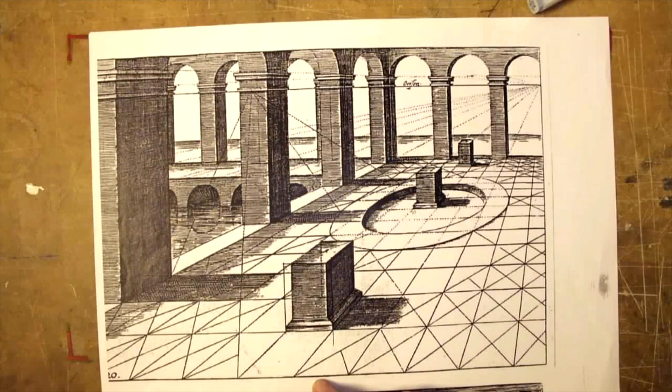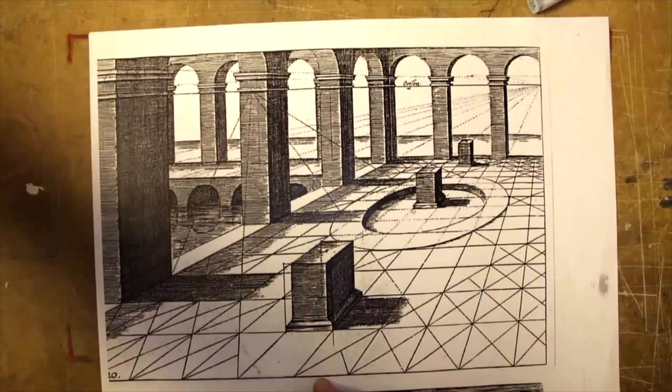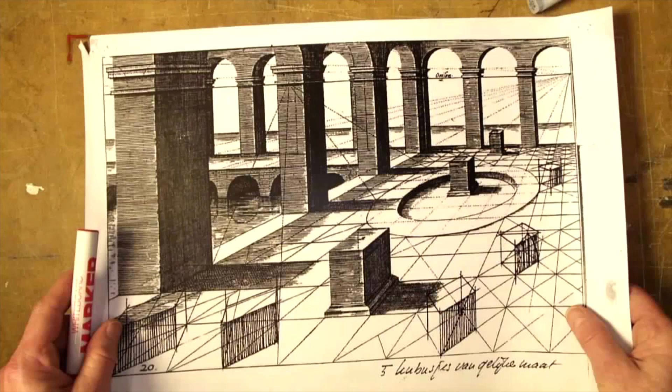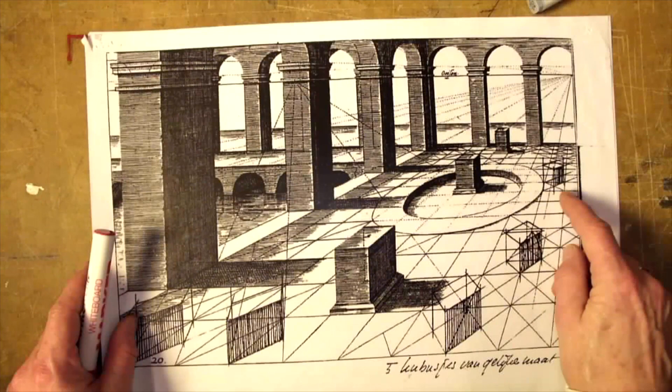The lines on the floor would suggest squares. Putting cubes on the diagonals makes the distortion visible. Close to the horizon the cubes look quite okay. But the further the distance towards the horizon becomes, the stranger the cubes get.